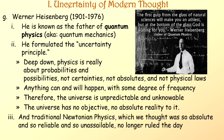Werner Heisenberg, 1901–1976, is known as the father of quantum physics, also known as quantum mechanics. He formulated the uncertainty principle. Deep down, physics is really about probabilities and possibilities, not about certainties, not about absolutes, and not about physical laws. Anything can and will happen with some degree of frequency — it's from this aspect of quantum mechanics that we get all our wonderful science fiction stories about alternate timelines and multiple universes. Therefore, the universe is unpredictable and unknowable. The universe has no objective, no absolute reality to it. The traditional Newtonian physics, which we thought was so absolute and so reliable and so unassailable, no longer ruled the day.